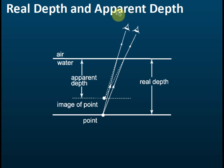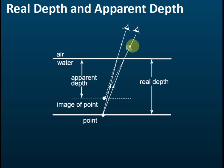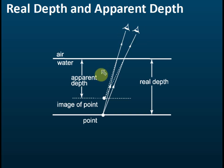Real depth and apparent death. If this is water and this is air, usually an observer will find that what he sees — what he observes — will be the apparent death. The apparent death is the death that he sees or perceives, and it is always less than the actual death.